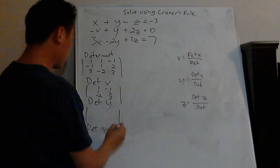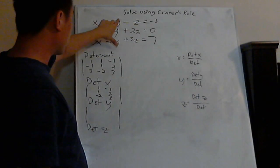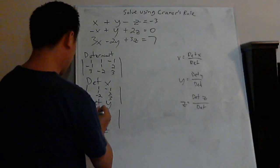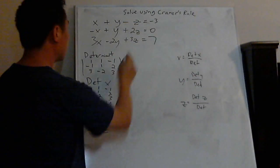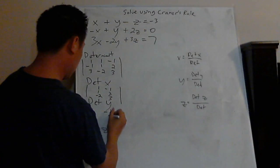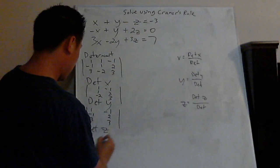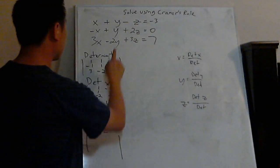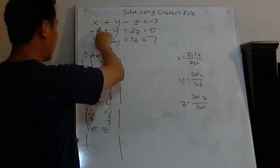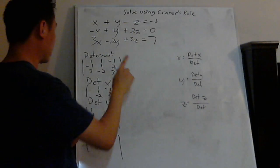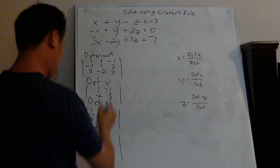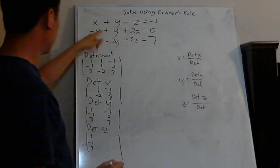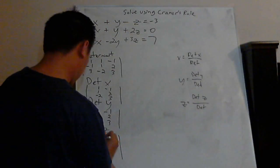Now for determinant y, I leave the y column blank and copy the x's and z's: 1, negative 1, 3 / and then negative 1, 2, 3. And for determinant z, I leave the z column blank. You get: 1, negative 1, 3 / 1, 1, negative 2.